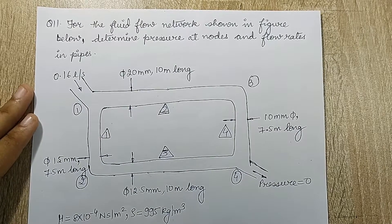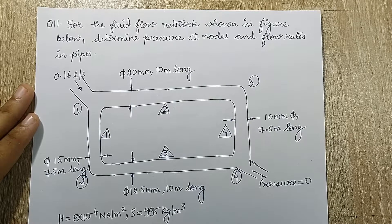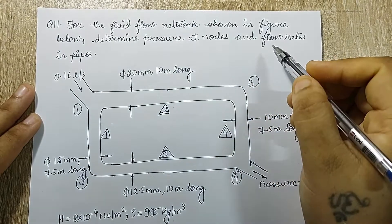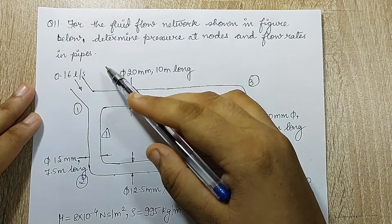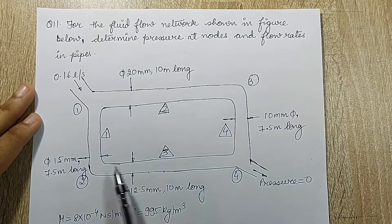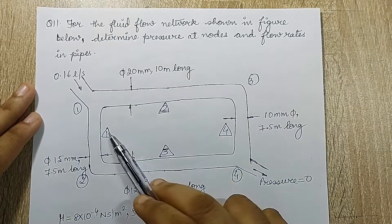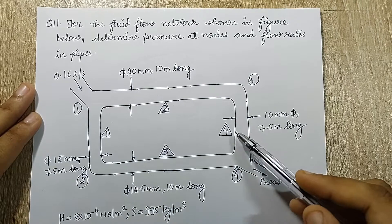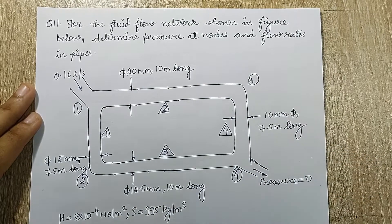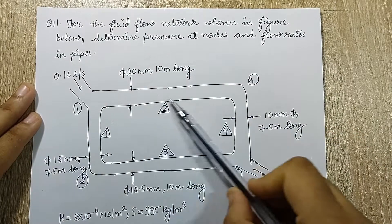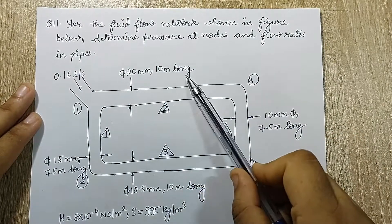Hello everyone, welcome to the next session of finite element analysis. I am solving question 11 — direct application of EME for the fluid flow network shown in the figure. Determine pressure at nodes and flow rates in the pipes. The network has elements 1–4 already marked: element 1 is between nodes 1–2, element 2 between 1–3, element 3 between 2–4, and element 4 between 3–4. Node numbering and element numbers cannot be changed. For each pipe, the diameter and length are given.